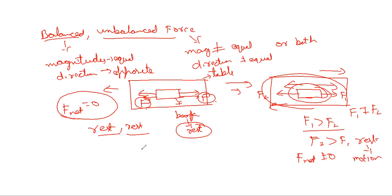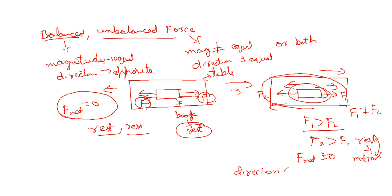On the whole, we can say that balanced force does not change the state of rest or uniform motion. Whereas unbalanced force changes the state of motion — if the object is at rest, it changes to motion; if it is already moving, it may bring it to rest. Additionally, unbalanced force can also change the direction of motion.